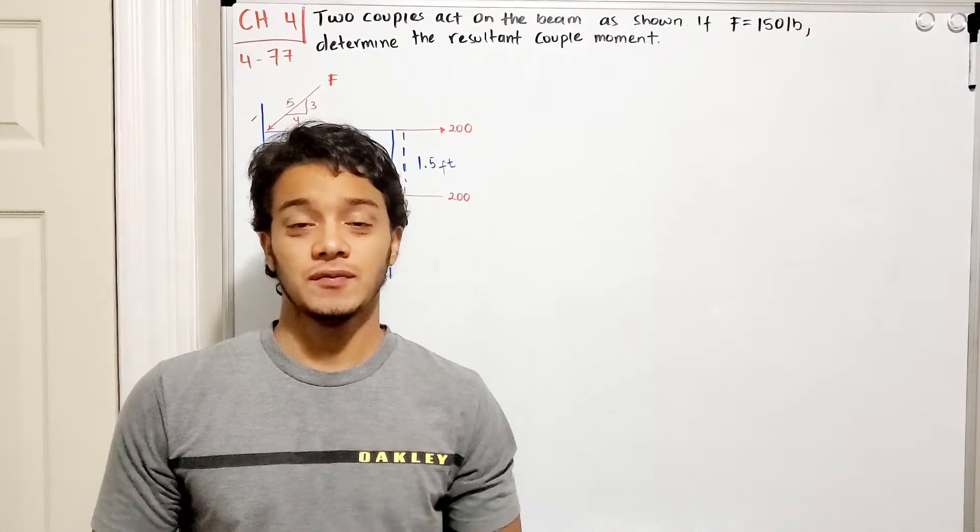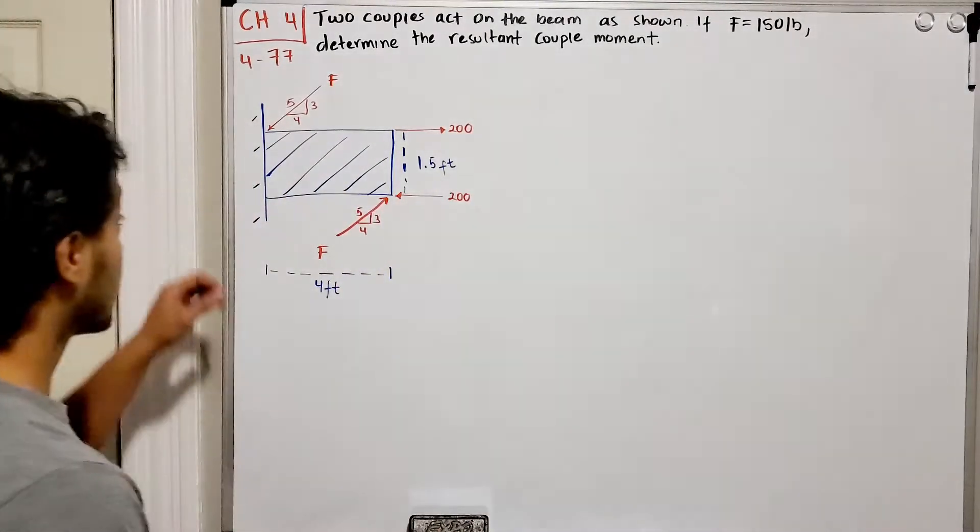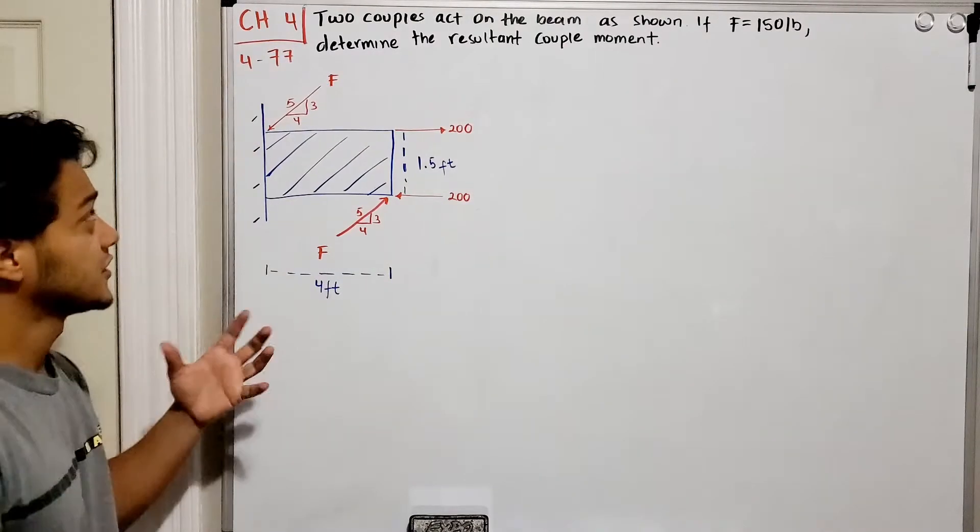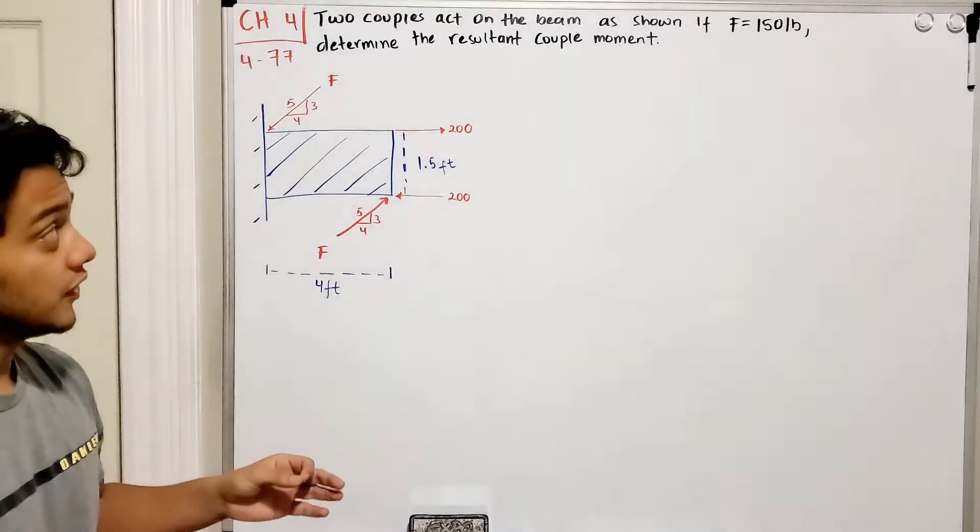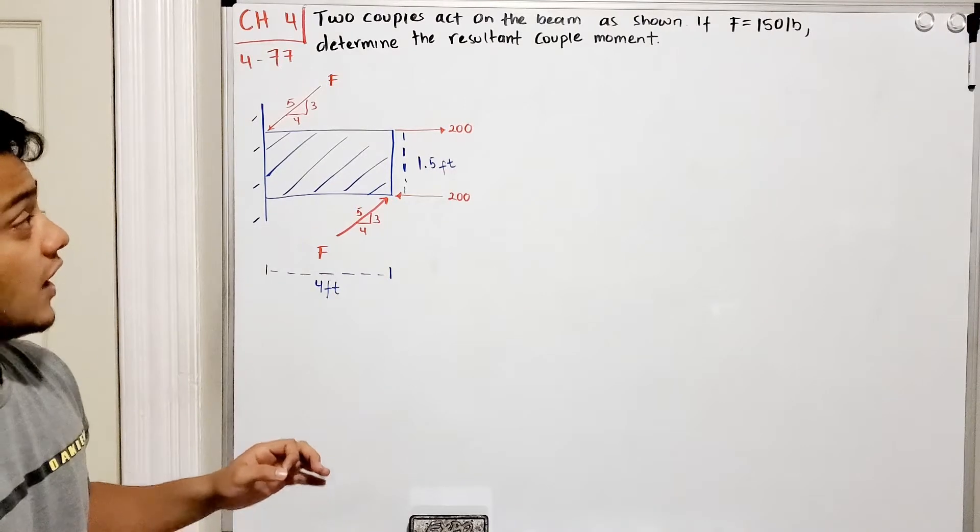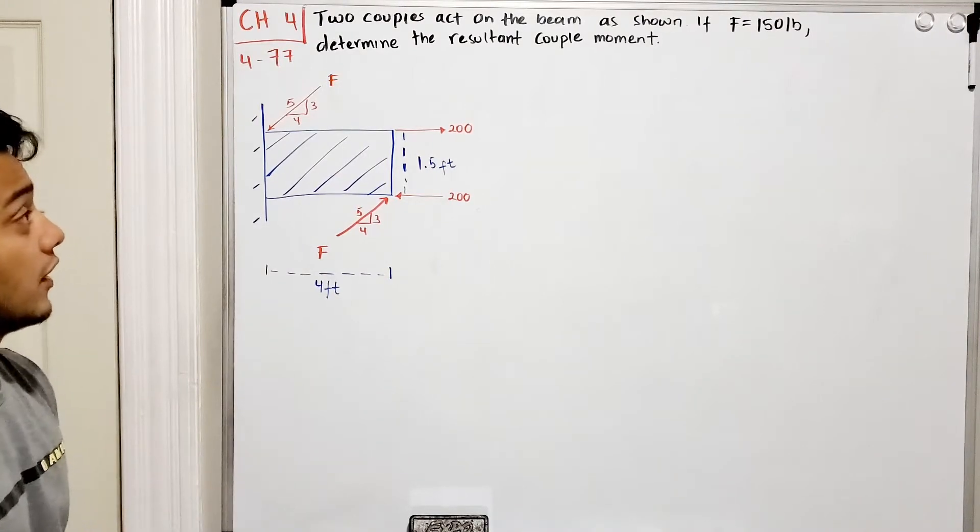Welcome back everyone to learning by teaching. We're in statics and we're gonna do problem 4.77. Two couples act on the beam as shown. If F is equal to 150 pounds, determine the resultant couple moment.